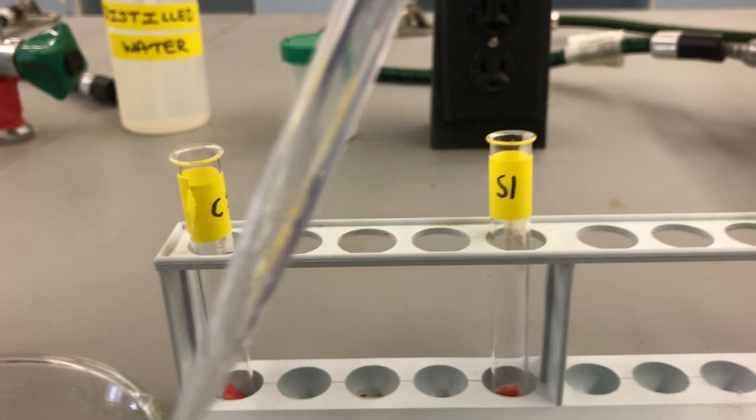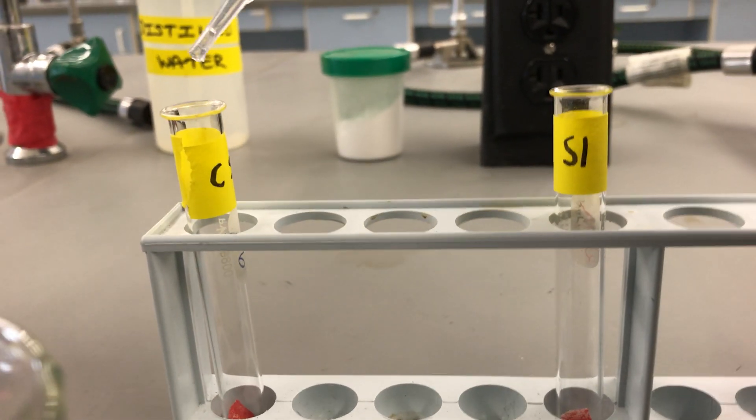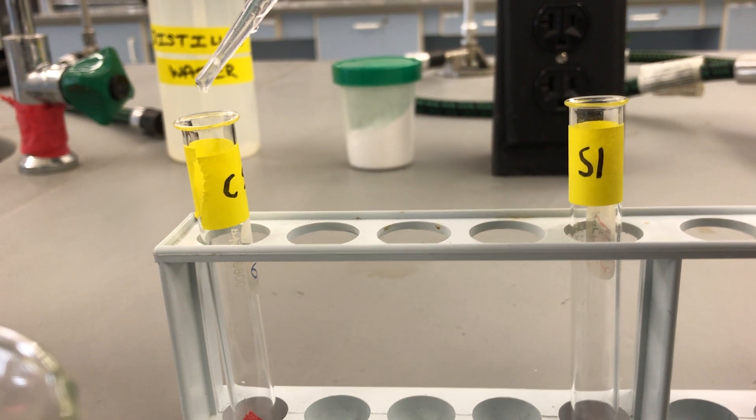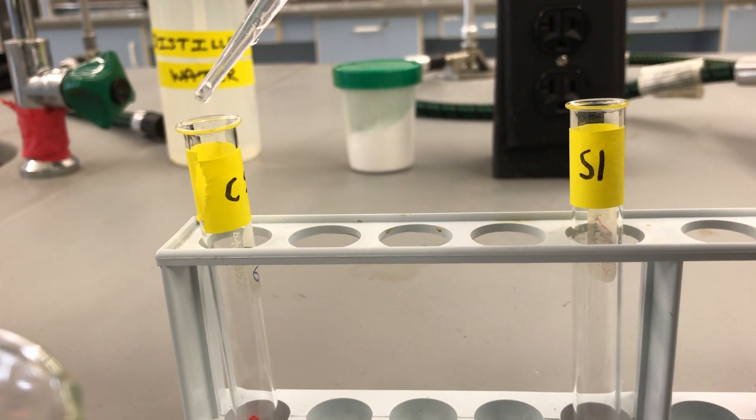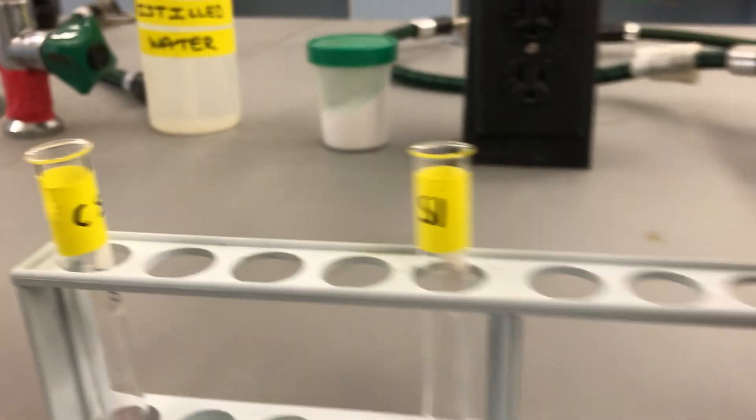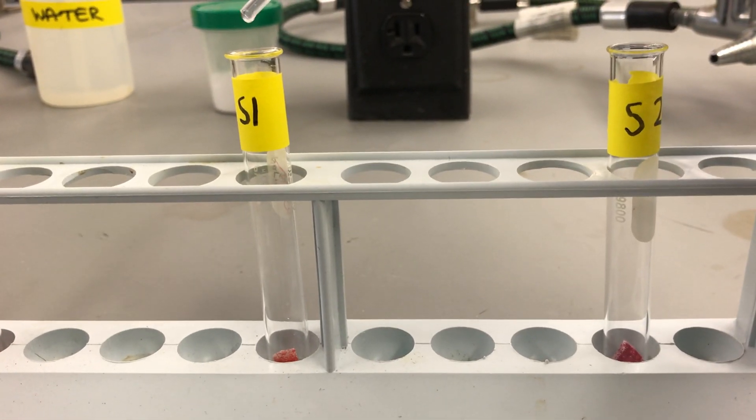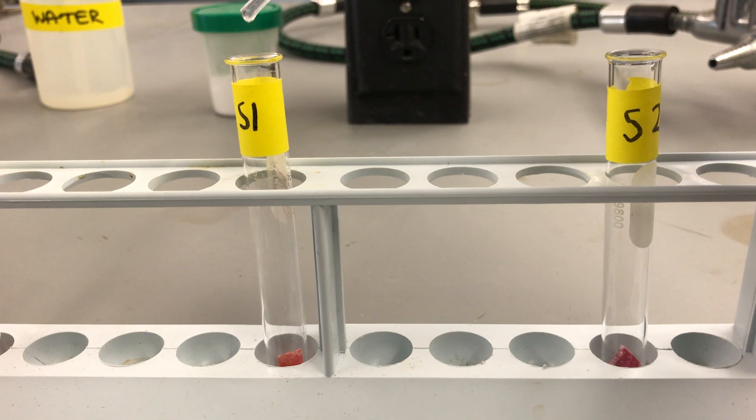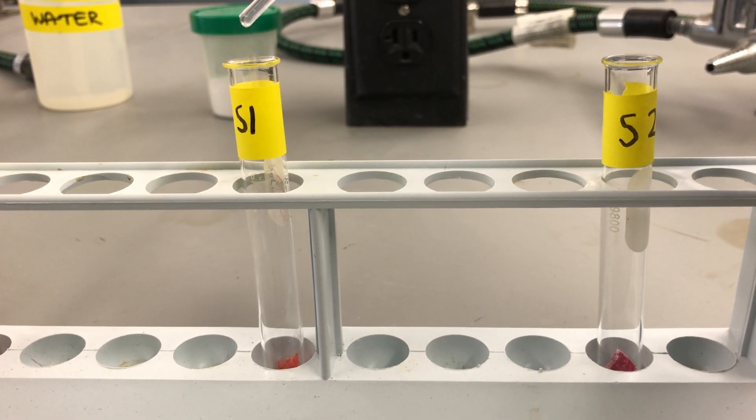We're then going to add about one, two, three, four, five, six, seven drops of our bottom layer to each test tube. Two, three, four, five, six, seven.